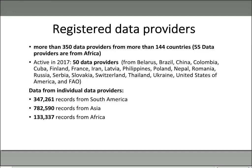Looking at records from individual data providers, most are coming from Asia, followed by South America, then Africa. Most users are also from Asia, as are most data providers. As for Africa, we are contributing about 133,337 records, which is just above 10% of the entire AGRIS collection. This shows us that content from Africa is quite minimal, and if we want our research to be used by the international community, we should contribute more.